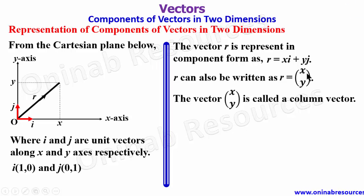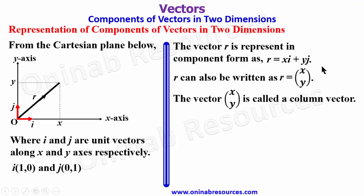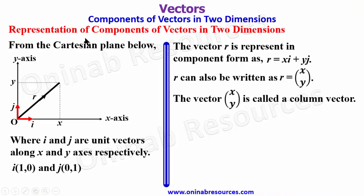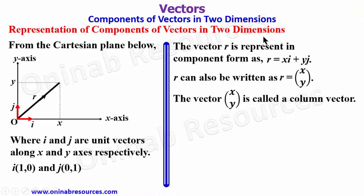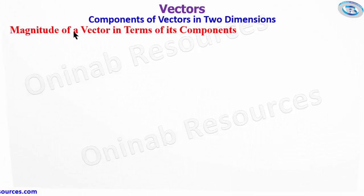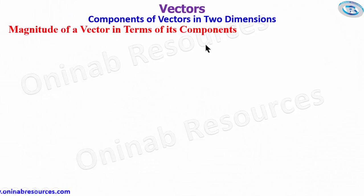This is the representation of components of vectors in two dimensions, either in component form or as a column vector. We then go to the magnitude of a vector in terms of its components.